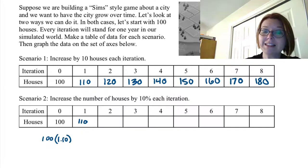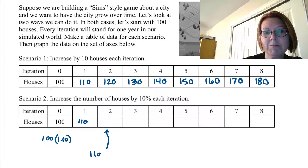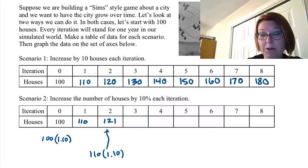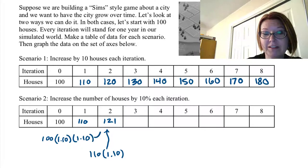In the second iteration we're taking 110 and multiplying it by 1.10. When we do that we get 121. Another way to write that would be to say it's 100 times 1.10 times 1.10, and that also gives us 121.